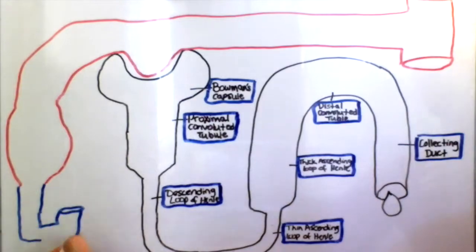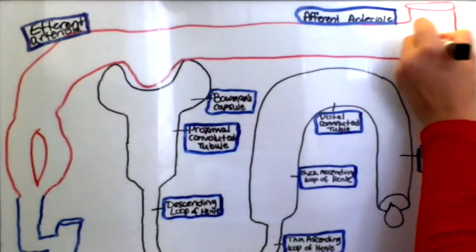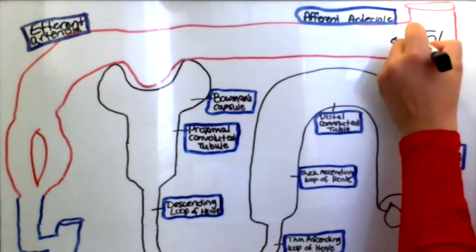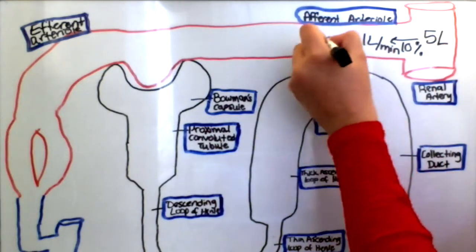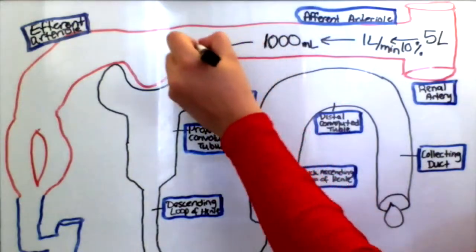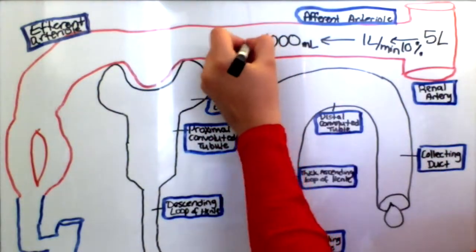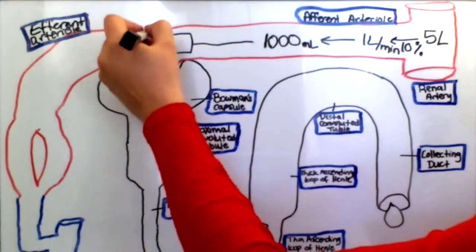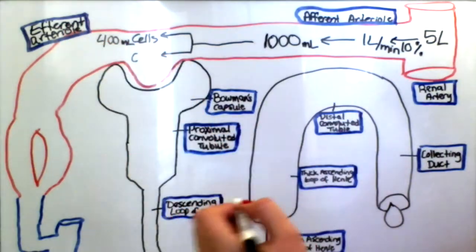There are five liters of blood circulating in our vascular system each minute. Of the five liters, one liter is sent to the kidneys. One liter is equal to a thousand milliliters. Of the one thousand milliliters, four hundred make up the cells, which are not filtered into the Bowman's capsule.